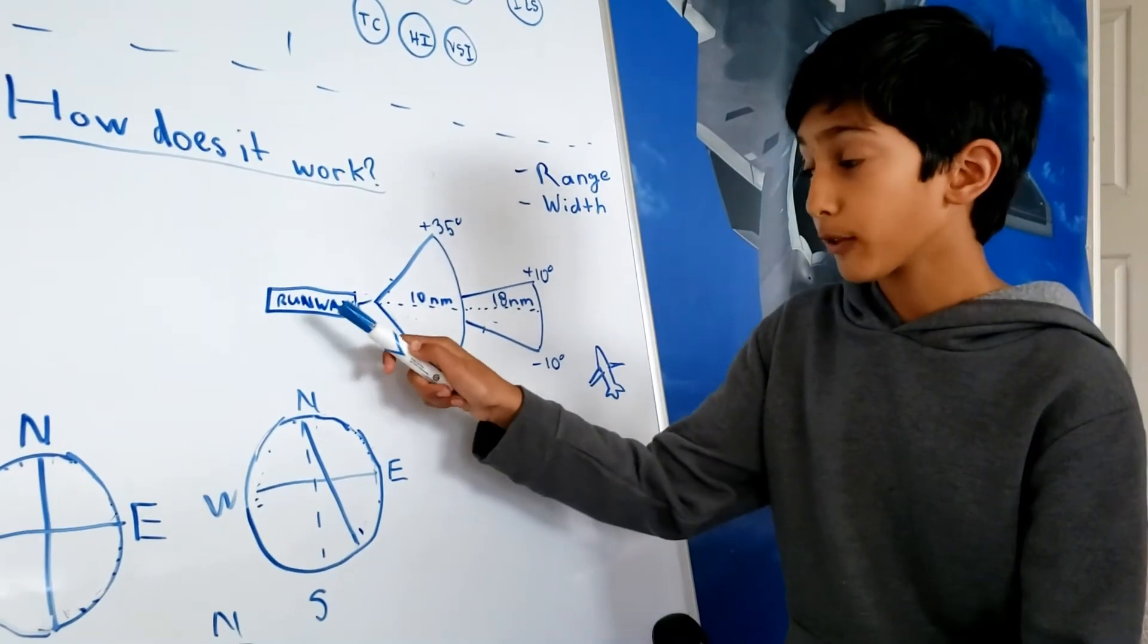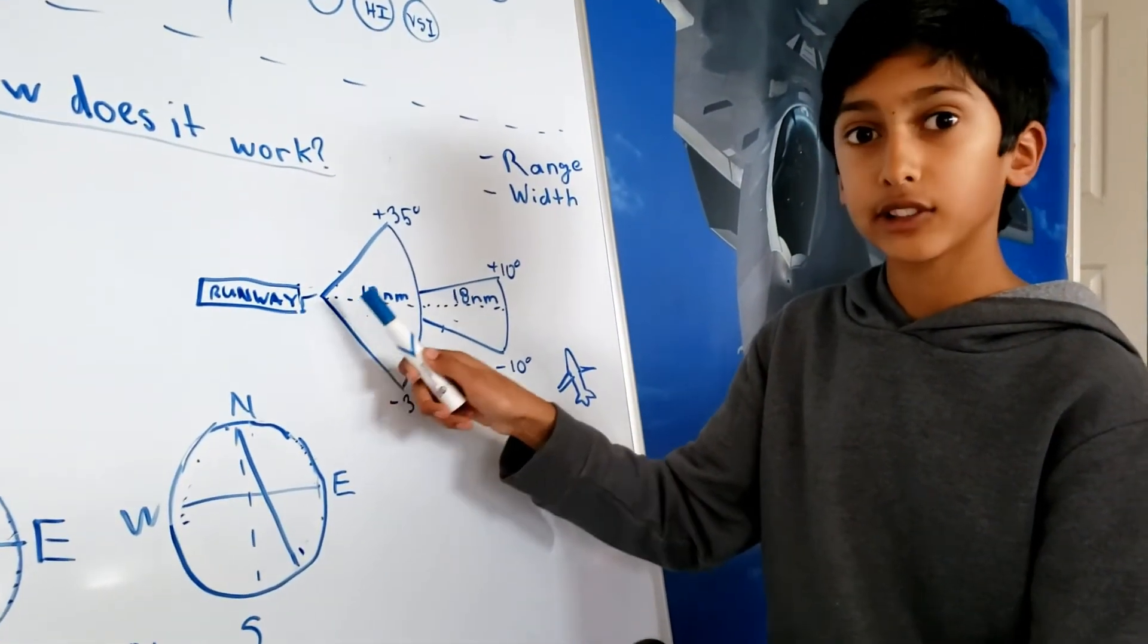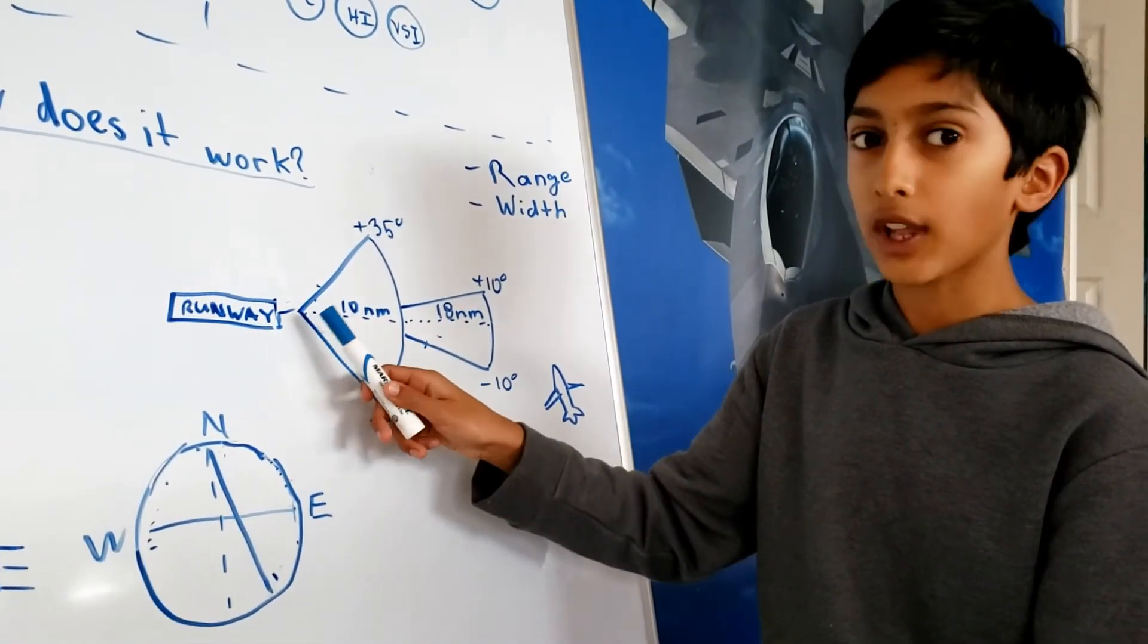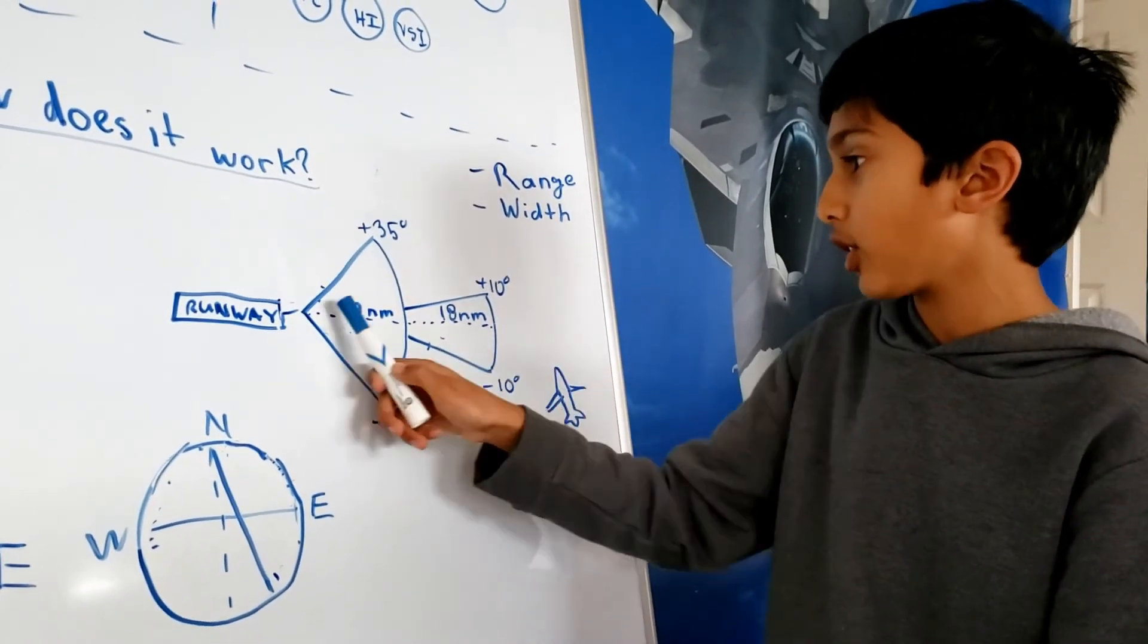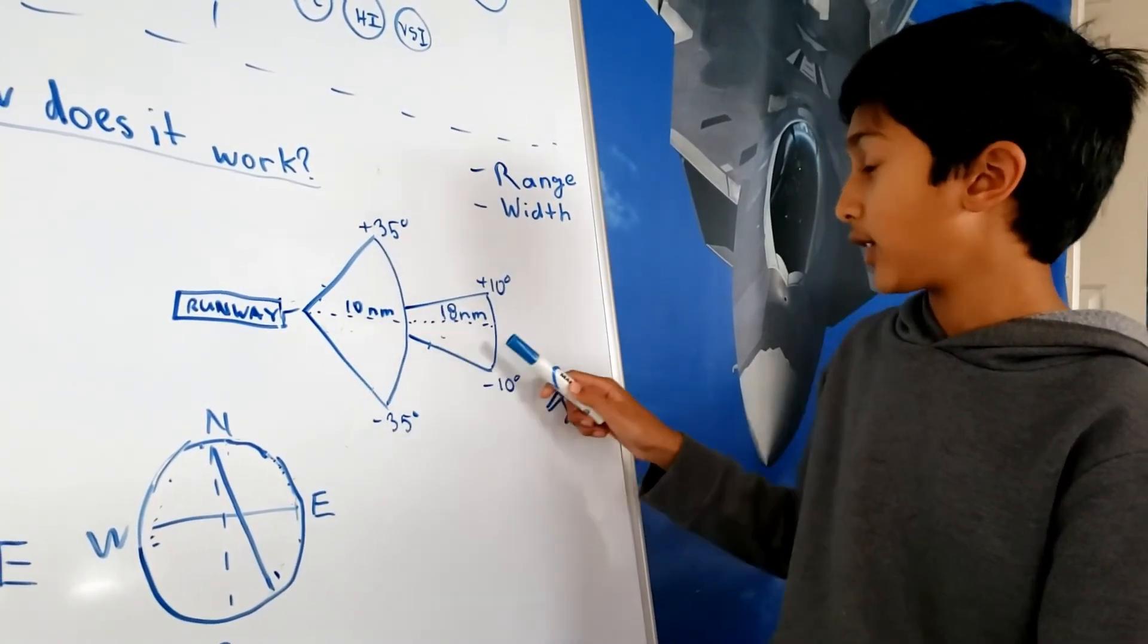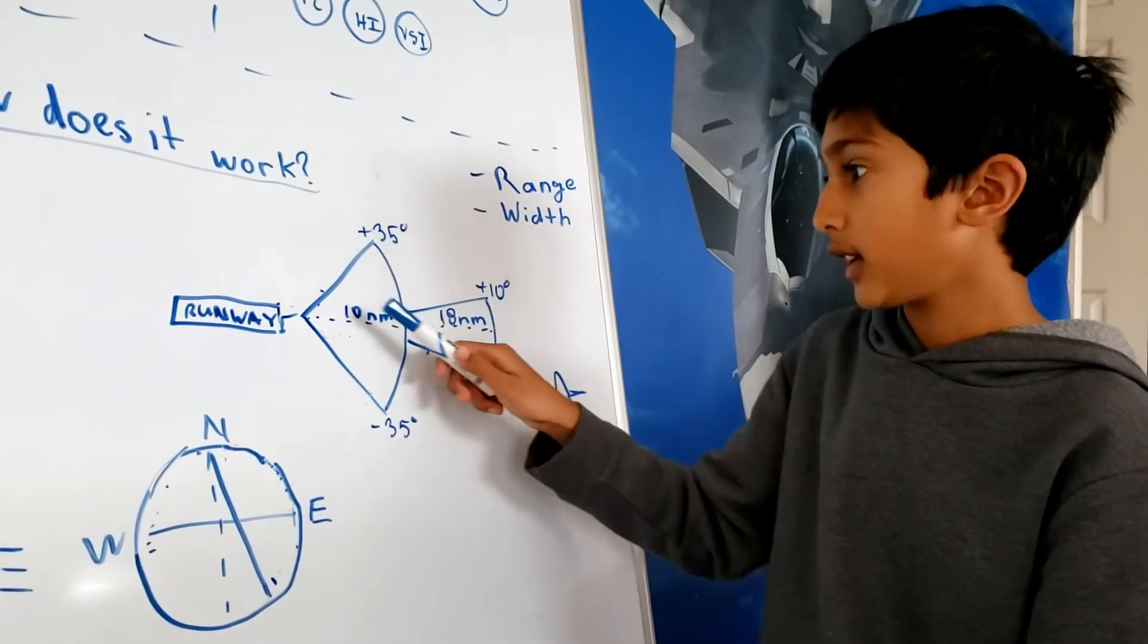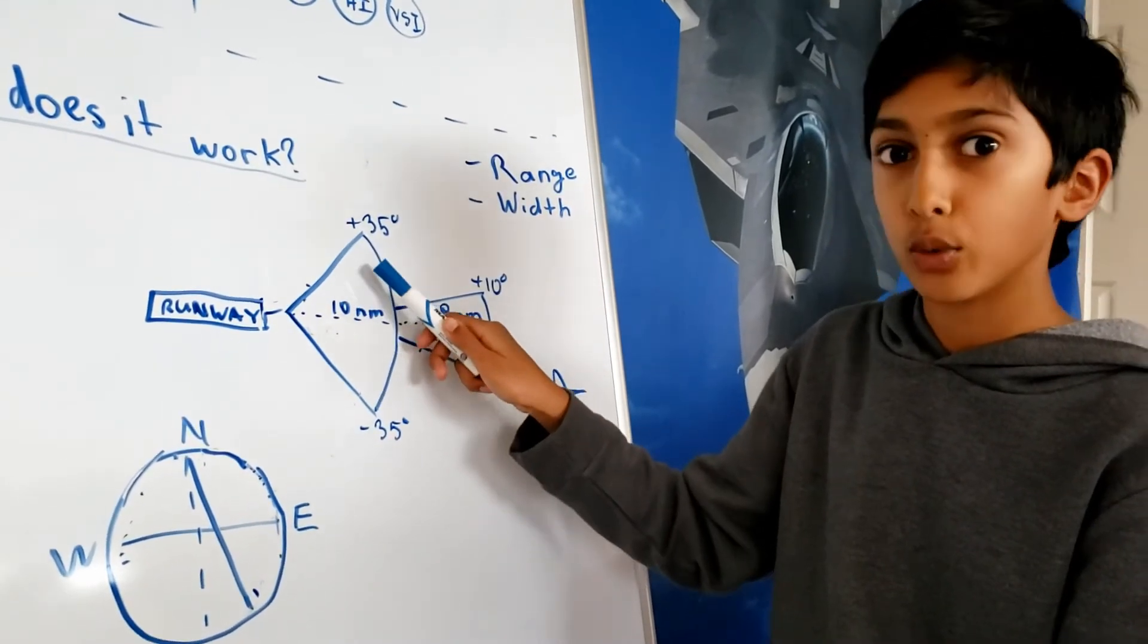Here we've got our airport and then our runway with our ILS localizer located at the edge of the runway. That localizer sends out two signals. One that is 18 nautical miles of range and 10 degrees of width from the center line. And then a 10 nautical mile range with a 35 degree width.